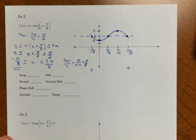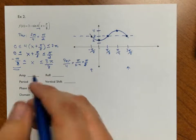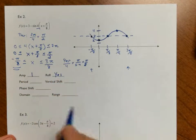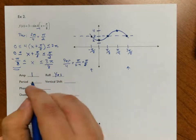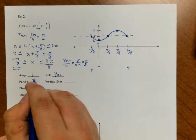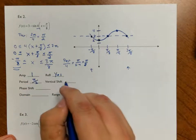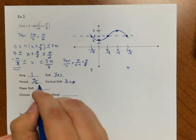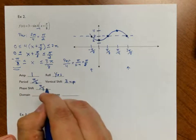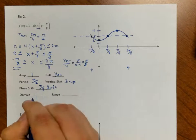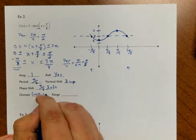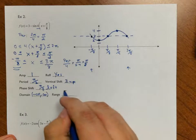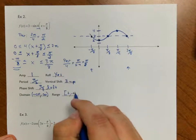In doing this, we've answered all the questions. The amplitude is 1. There is a reflection in the x-axis. The period was π/2. The vertical shift was 3 units up. The phase shift was π/8 to the left. The domain is all real numbers, negative infinity to infinity. And the range goes from 2 up to 4.